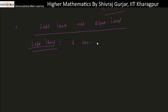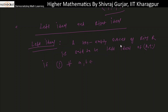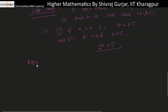A non-empty subset I of ring R is said to be a left ideal of R if: first, for each a, b belonging to I, a minus b belongs to I; and second, for each r belonging to capital R and a belonging to I, r·a belongs to I. The left ideal absorbs elements of R from the left side, that's why it is known as a left ideal. Similarly we can define a right ideal.